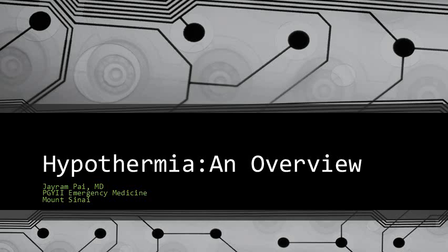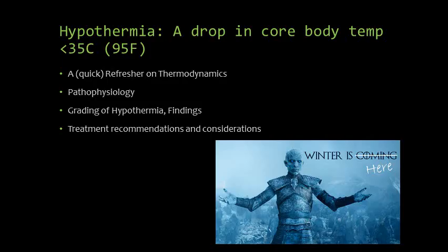Hi everybody. My name is Jayram Pai. I'm a second-year emergency medicine resident at Mount Sinai. Today we are going to be going over hypothermia. It's defined as a drop in core body temperature under 35 degrees Celsius, or for those of you not a fan of the metric system, that's 95 degrees Fahrenheit.